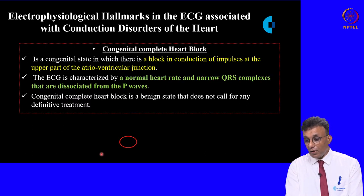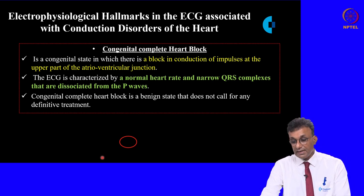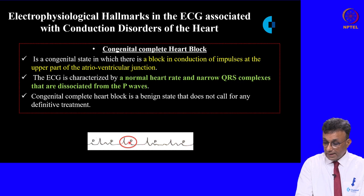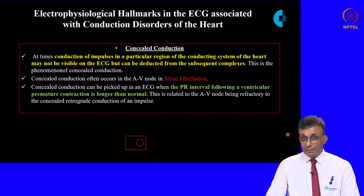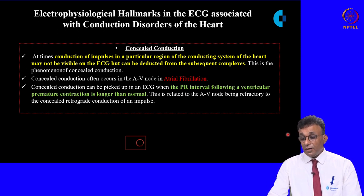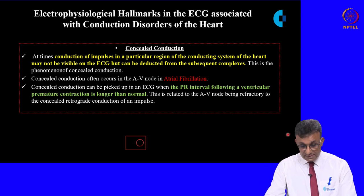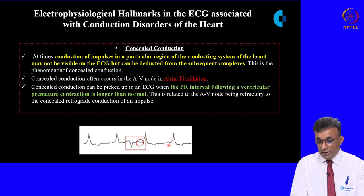Congenital complete heart block is a block in conduction of impulses at the upper part of the atrioventricular junction. The ECG shows a normal rate with narrow QRS complexes dissociated from the P waves. Concealed conduction occurs when certain impulses are not picked up on the ECG at the expected point but can be identified by analyzing subsequent complexes. Atrial fibrillation is an example — the PR interval following a ventricular premature beat is usually longer than normal.